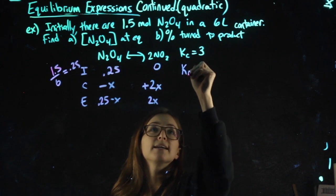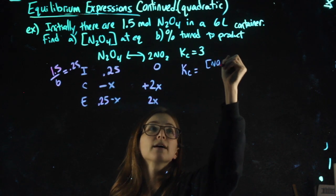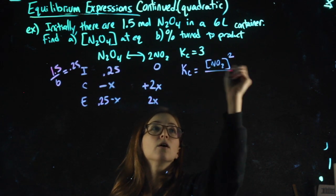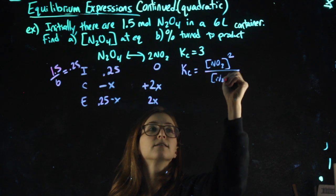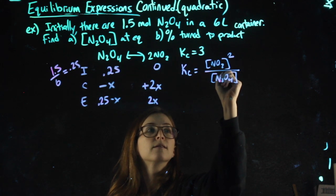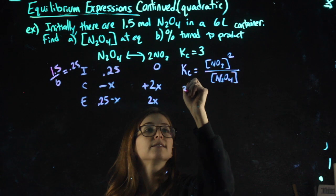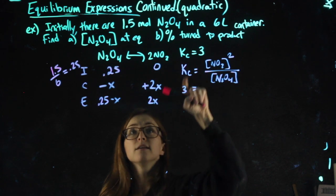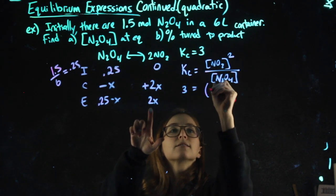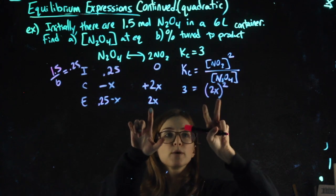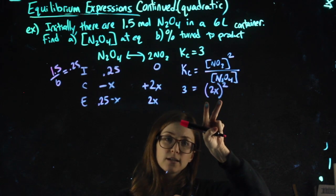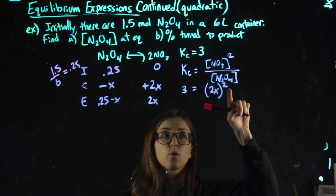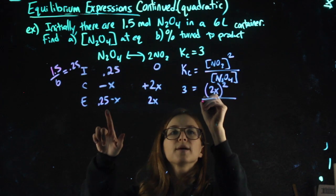I can set up my KC by doing products over reactants. I know that my KC is equal to 3. That was given. Products - it's really important you have these parentheses here knowing that that whole thing is squared over reactants.